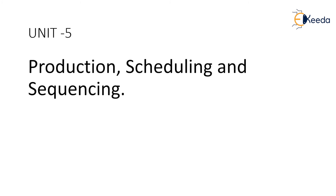Unit 5 consists of production scheduling and sequencing. Whenever a product is generated in an industry, what is the method being followed, how it is sequenced, and how it is scheduled — which process is to be utilized first and which process is to be utilized next — is what we will be learning under production scheduling and sequencing.